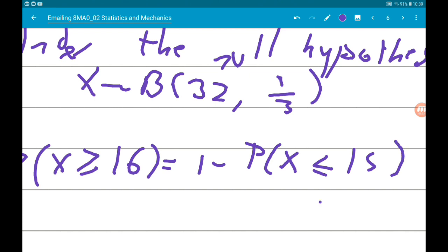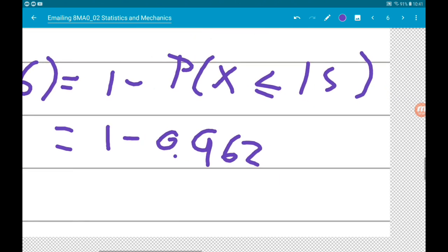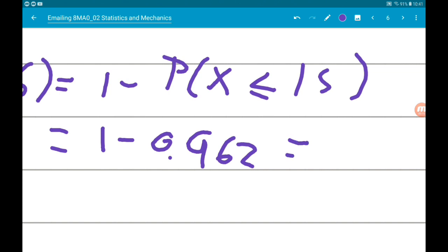Again, use our calculators. We want binomial cd. We're going to get one minus 0.962, which gives us 0.038.